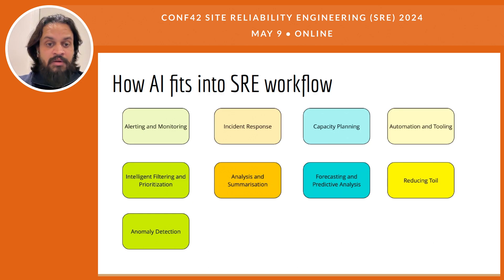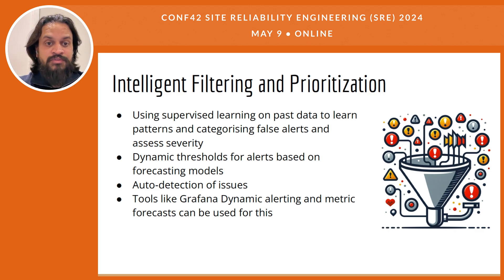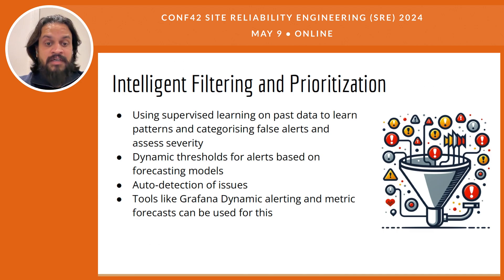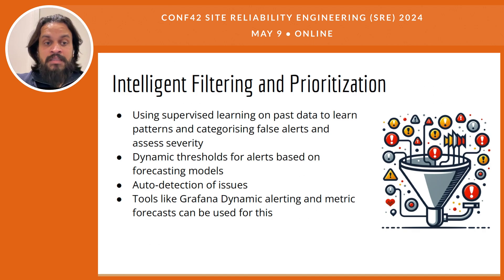Supervised learning, a type of machine learning, can be useful in more efficient filtering and prioritization of alerts. By training models on historical incident data, AI can learn to distinguish between genuine and false alerts, effectively reducing noise and enhancing focus on critical issues. Additionally, these models can assess the severity of incidents by recognizing patterns that correlate with major disruptions. This capability allows SREs to prioritize their response more effectively, ensuring that the most damaging issues are addressed promptly while minimizing the distractions of false alarms.